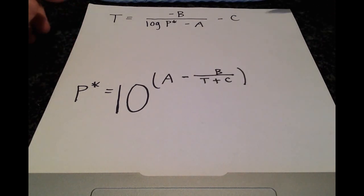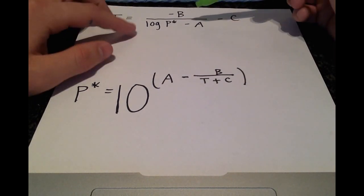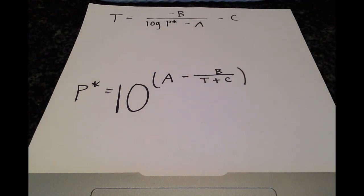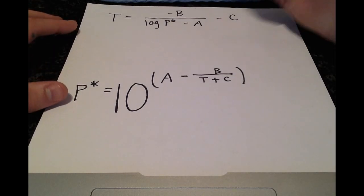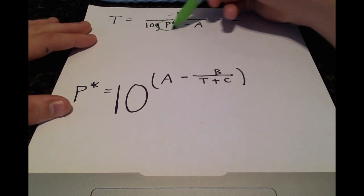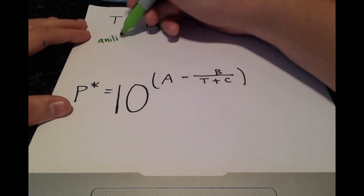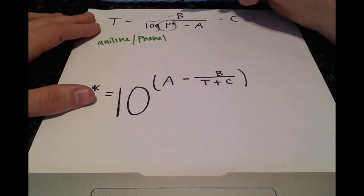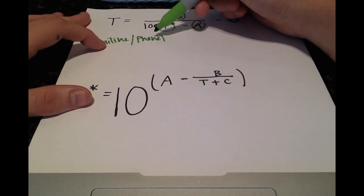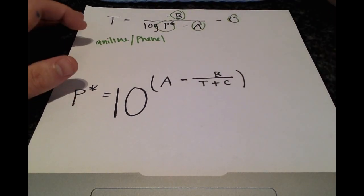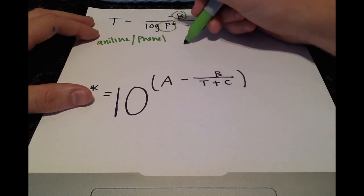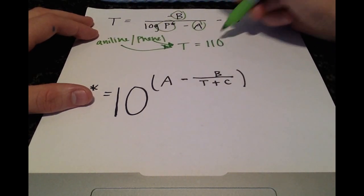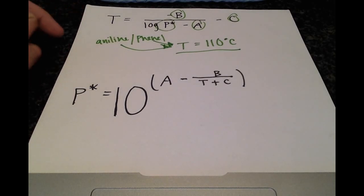Alright, so here we've rewritten the Antoine equation and solved for the temperature in terms of vapor pressure and the vapor pressure in terms of temperature. And to solve this problem, both of these will be important. And we have the vapor pressure values for both aniline and phenol. So we can plug in the appropriate constants, whichever one you choose to use. We're given the constants for both of these, and also the appropriate vapor pressure. And regardless of which one you use, you'll find that the temperature of our system is 110 degrees Celsius.